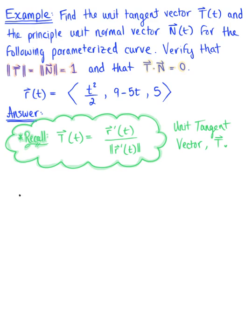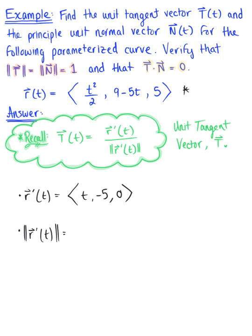The first thing we need is the tangent vector, r'(t). Differentiating our given parametrized curve, we are left with (t, -5, 0). Now we need to find the magnitude of this tangent vector. Plugging these components into our distance formula, we have the square root of t squared plus negative 5 squared, which gives us 25. So the magnitude is √(t² + 25).